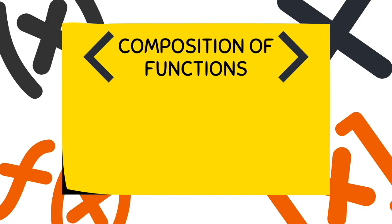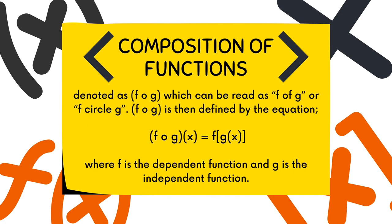We have now reached the end of our examples. Now let's have a small recap — let us refresh our minds on what is composition of functions. Composition of functions is done by substituting one function into another function, and is denoted as f of g, which can be read as 'f of g' or 'f circle g.' f of g is defined by the equation below, where f is the dependent function and g is the independent function.